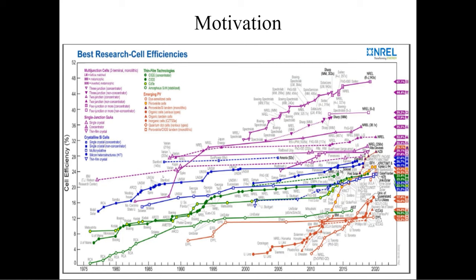This is my motivation. This map is from NREL, and as shown here, the emerging photovoltaic technologies are shown in orange. There is a lot of research, and the efficiency of these emerging technologies leads up to 70 percent.